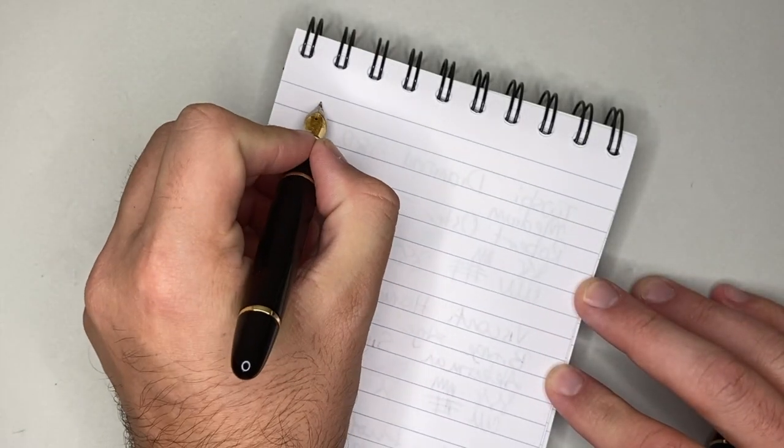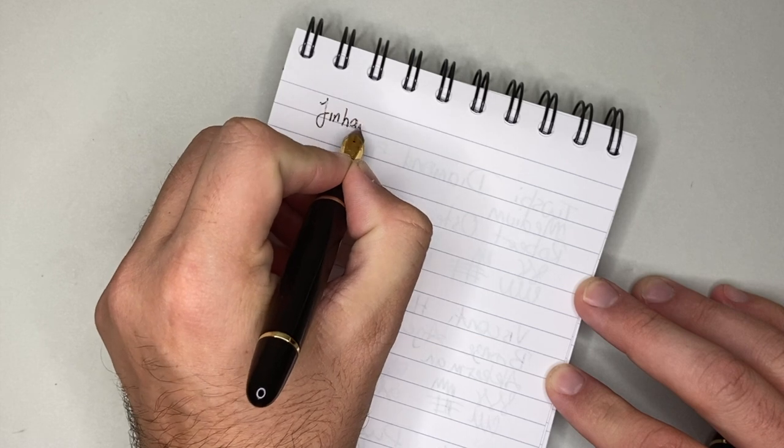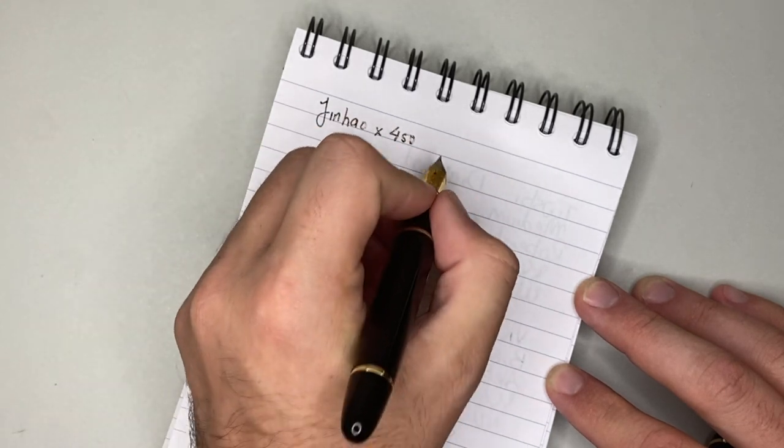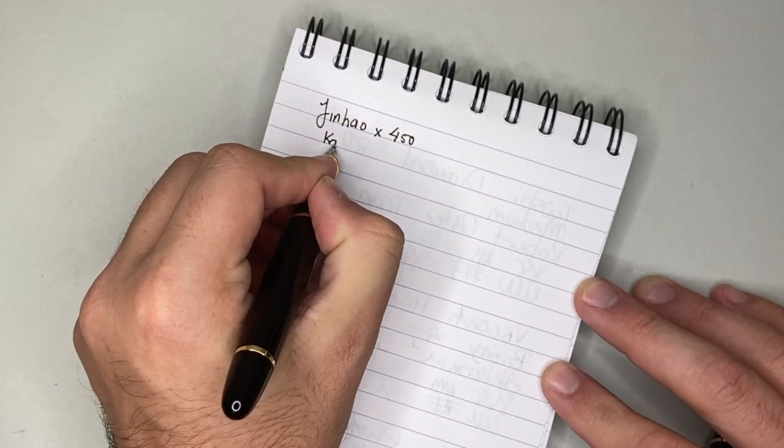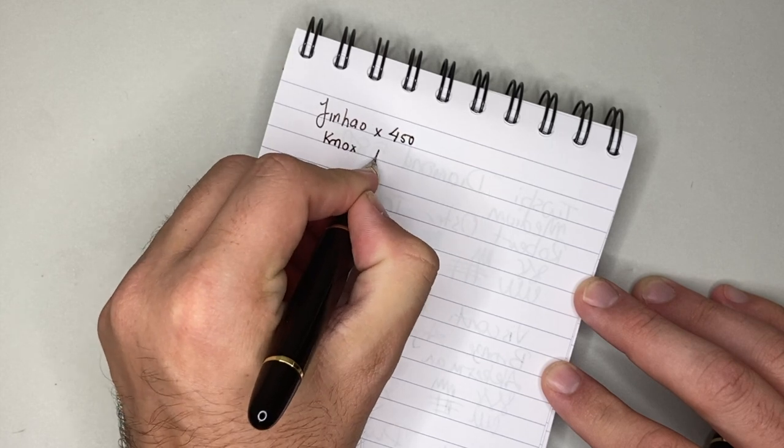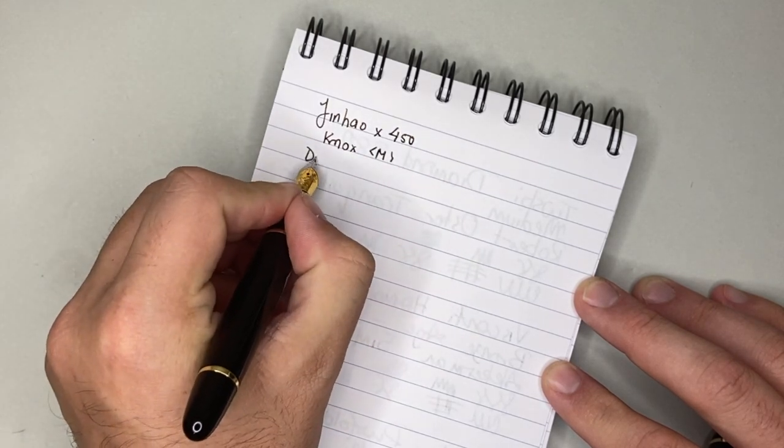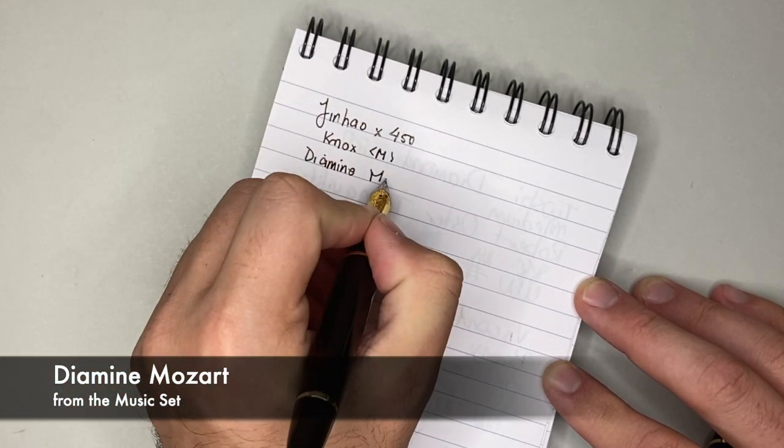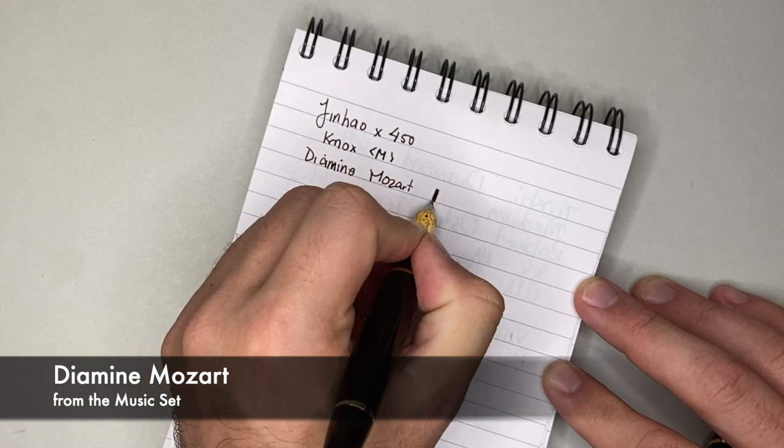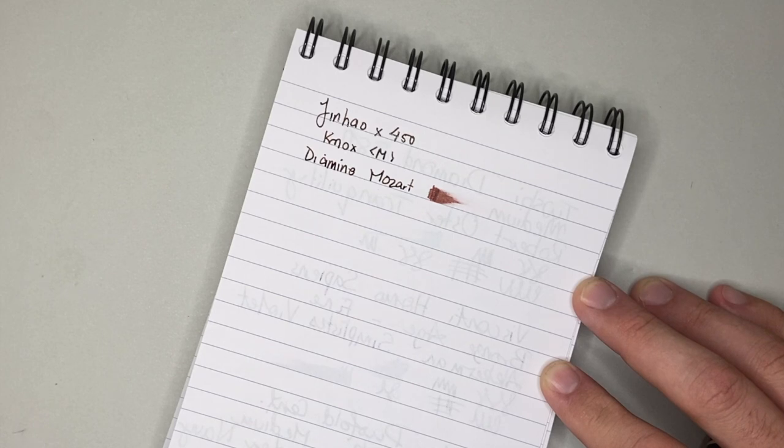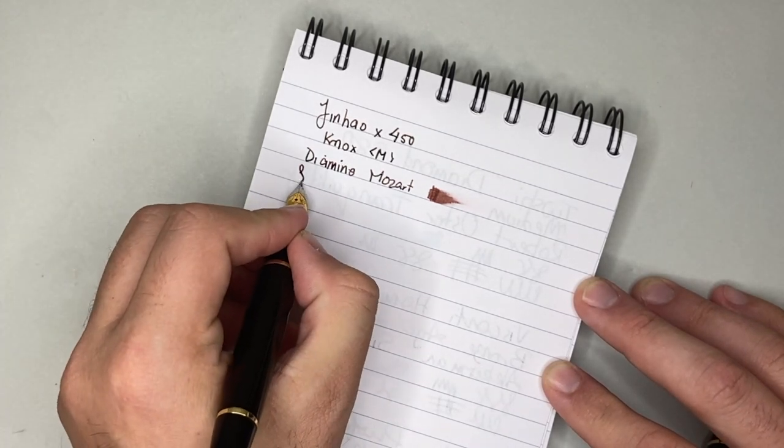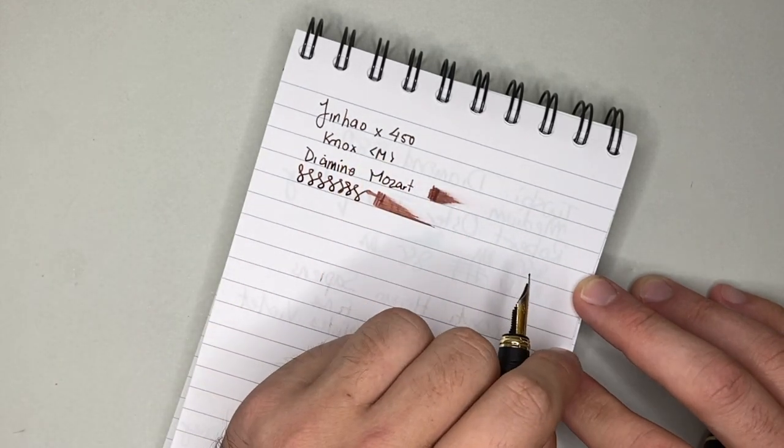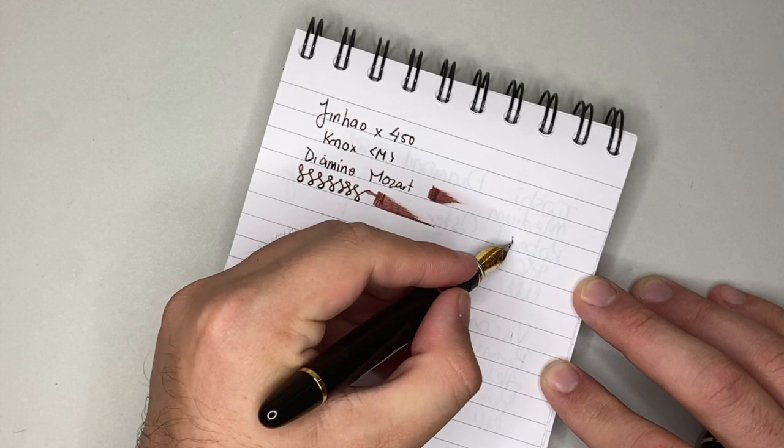So we have the Jinhao X450 with a Nox medium nib, and the ink here is Diamine Right Side from the music set, a lovely sort of sepia brown color. I quite like it. I like this pen. I like this nib. It's very smooth. It's pretty wet, like really. It's certainly not dry. And it's pretty reliable.